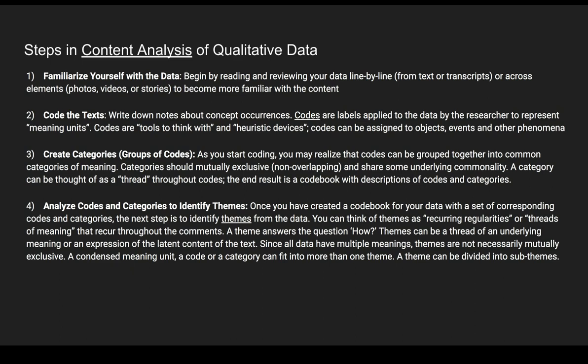Once you've developed a set of codes from your text or transcripts, the next step is to group them together and potentially create categories. As you begin coding, you might realize that certain codes can be grouped into common categories of meaning. Categories should be mutually exclusive and non-overlapping, but should share some underlying commonality. You can think of a category as a thread that weaves between various codes, with the end result being a codebook that has descriptions of all the codes and categories that apply to your data — whether it's social media text, transcripts, or other qualitative data.